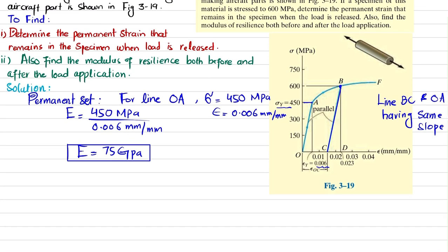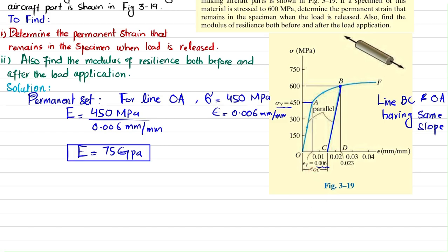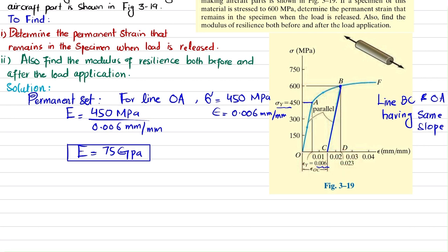We are going to find the permanent set. When you release the load of 600 MPa at point B, the material will unload down to point C. The strain that remains — strain OC — is the permanent strain. The total strain at point B corresponding to 600 MPa is 0.023 mm/mm. To find the permanent strain, we work with triangle CBD.